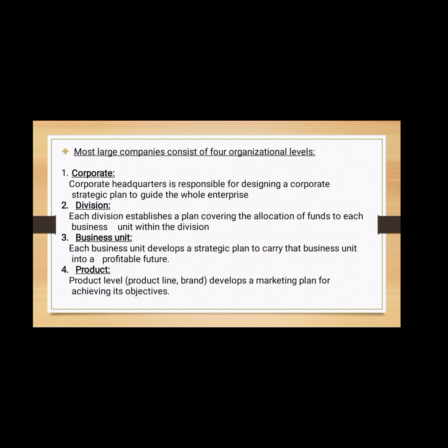Most large companies consist of four organizational levels: corporate, division, business unit, and product. Corporate headquarters is responsible for designing a corporate strategic plan to guide the whole enterprise; it makes decisions on the amount of resources to allocate to each division as well as on which businesses to start or eliminate. Each division establishes a plan covering the allocation of funds to each business unit within the division. Each business unit develops a strategic plan to carry the business unit into a profitable future, and each product level develops a marketing plan for achieving its objectives.